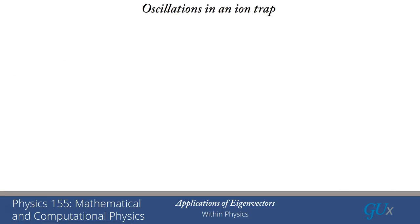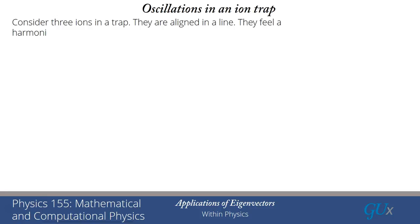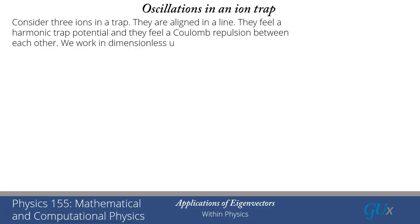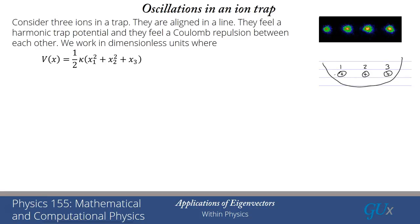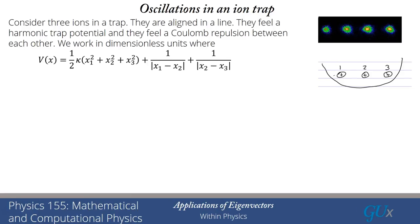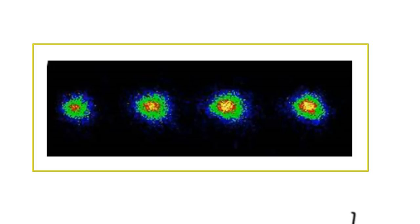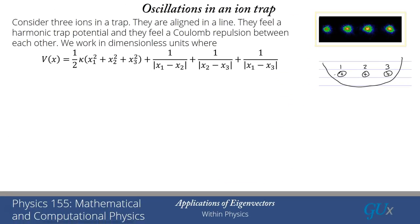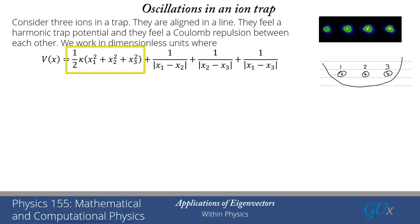We're now going to go on to our second problem: oscillations in an ion trap. You can trap small numbers of ions in a linear Paul trap — they're aligned in a line and essentially feel a harmonic trap potential and a Coulomb repulsion between each other because each of the ions is charged. On the upper right is a picture of what these ions look like when you shine light on them — they act like lighthouses, shining light back at us. Those are pictures of four individual ions emitting light as a laser is shone on them.